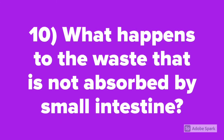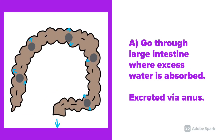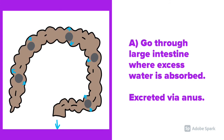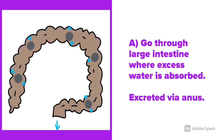Question number 10: What happens to the waste that is not absorbed by the small intestine? The waste material goes through the large intestine where excess water is absorbed, then it is excreted via the anus.